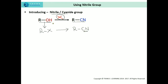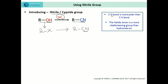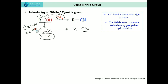But what is the reason why alcohols cannot be directly converted into alkyl nitrile? There are two main reasons. First, the C-O bond is more polar as compared to the C-X bond. The carbon-oxygen bond is more polar than the carbon-halogen bond because oxygen is more electronegative than halogen.